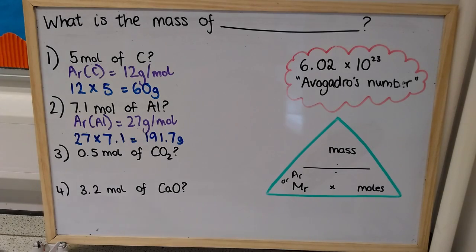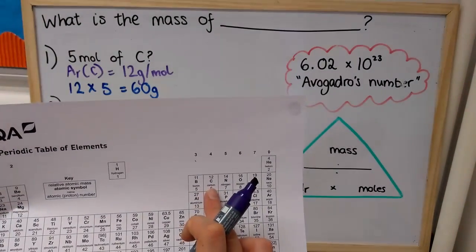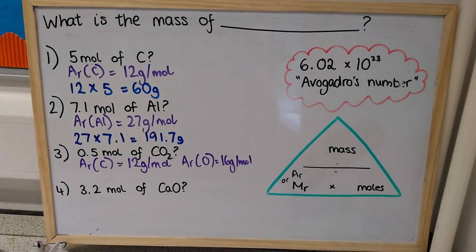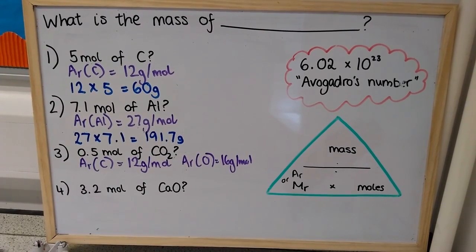So in order to do that, I'm going to need the relative atomic masses of carbon and oxygen. So once I have the relative atomic mass of those two elements, then I can put them together to calculate the MR.